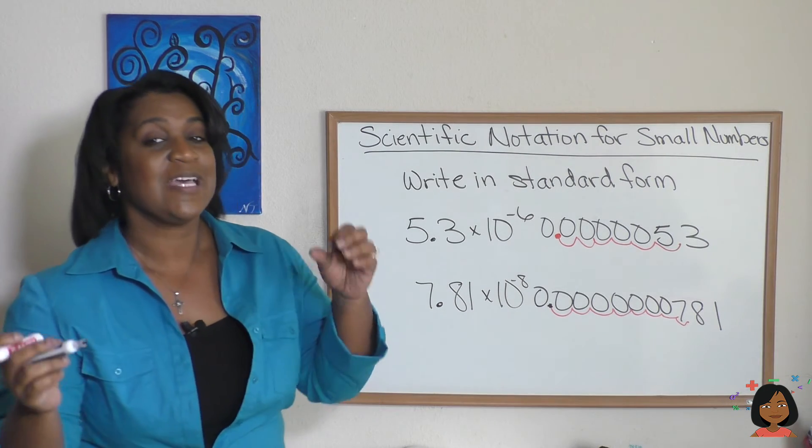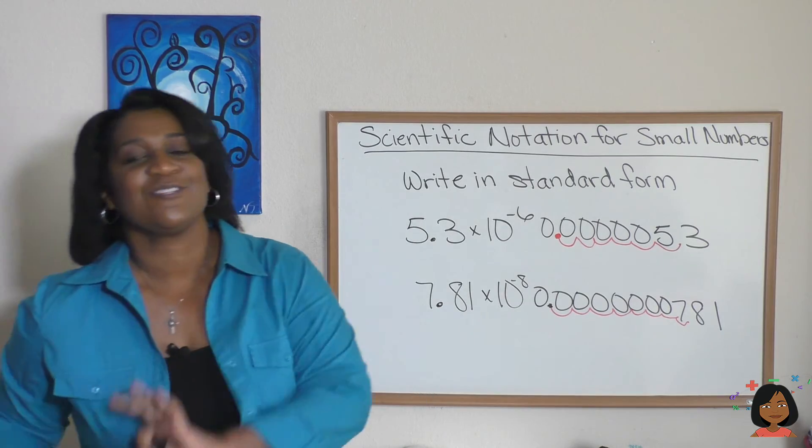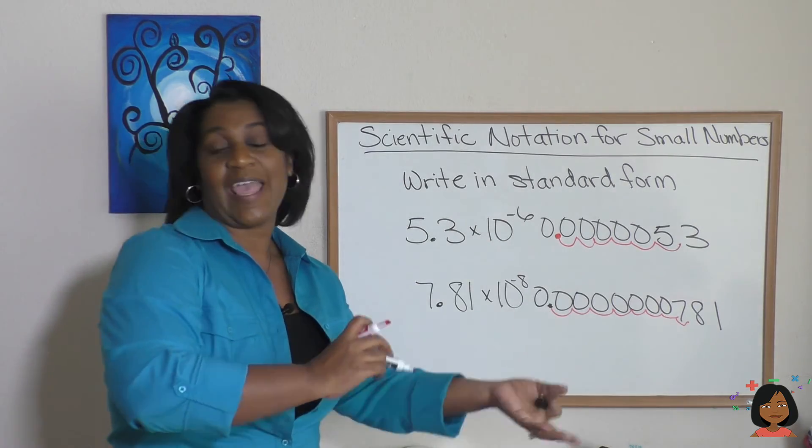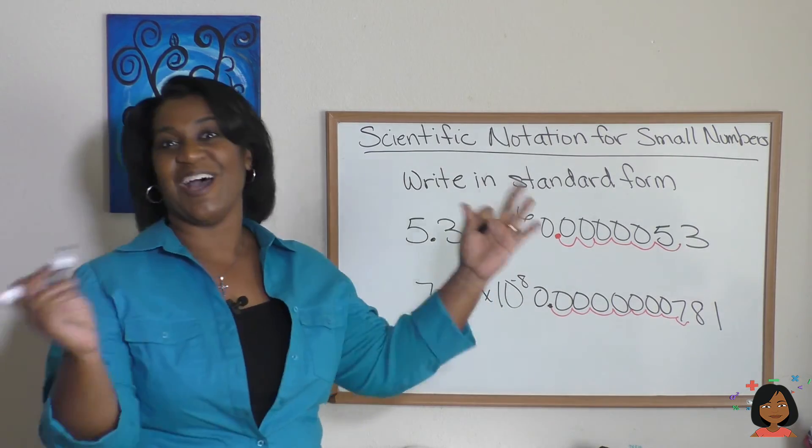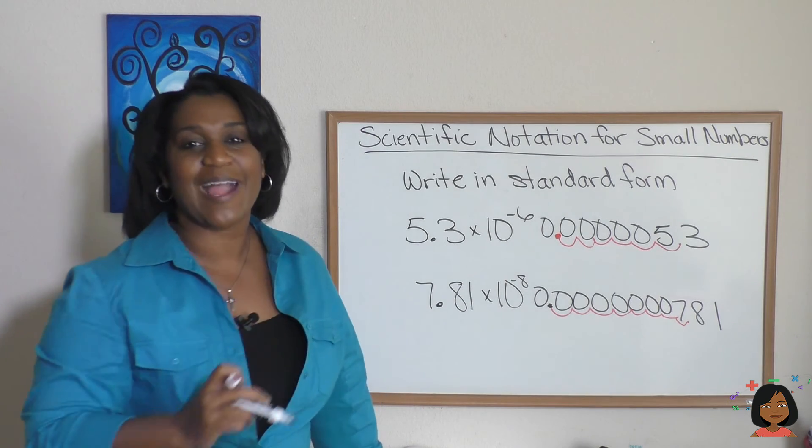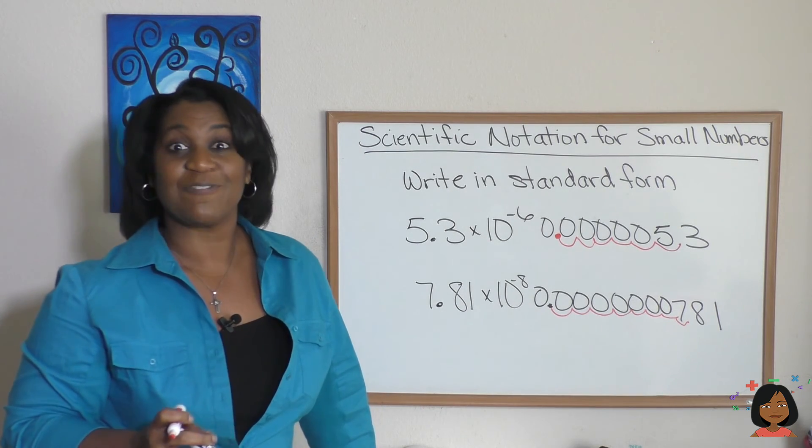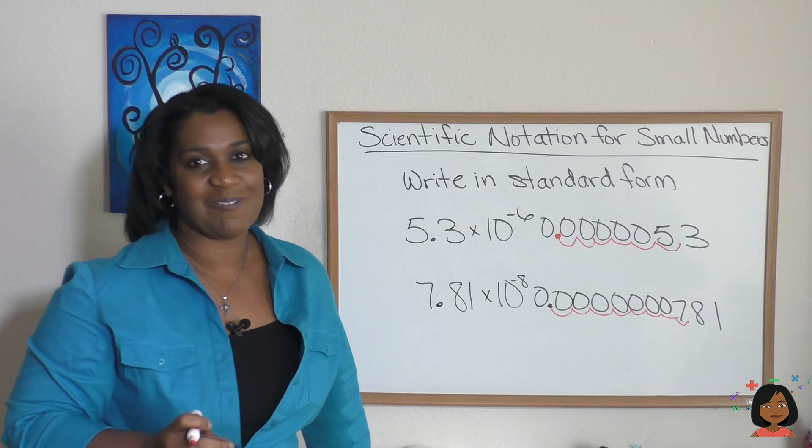So you now can go from scientific notation with a negative exponent to standard form and backwards and forwards. That's it. Try our practice problem so you can do this on your own. I will definitely see you next time. Hope you're having a great one. Bye.